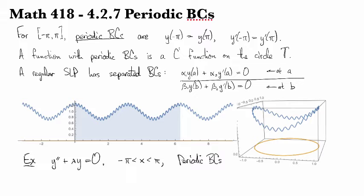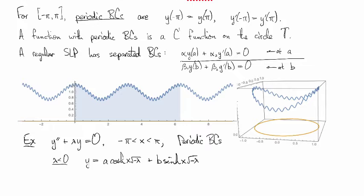Okay, so let's see. Suppose we look for negative eigenvalues. So in this case, we know that the general form for y looks like a cosh x root minus lambda plus b sinh x root minus lambda.